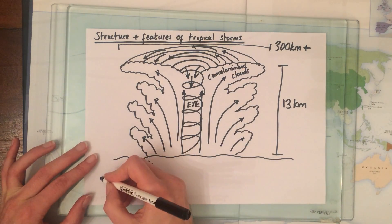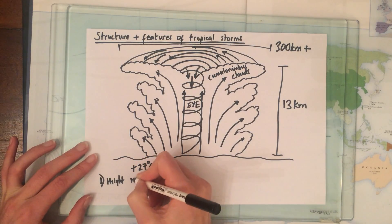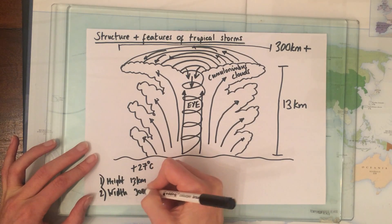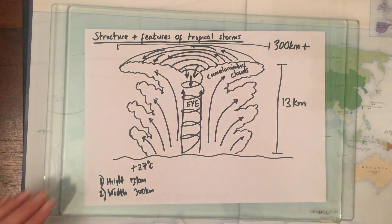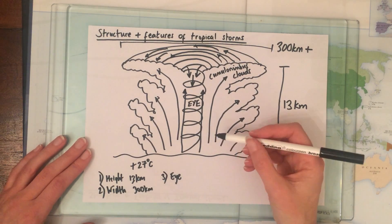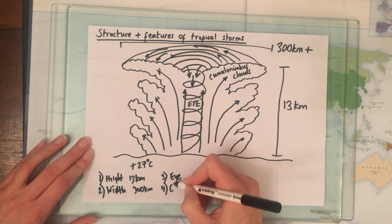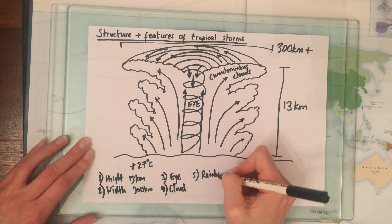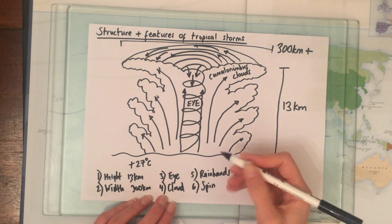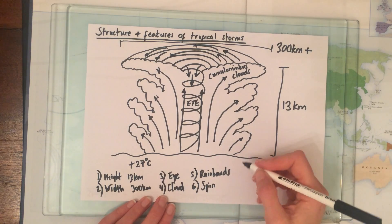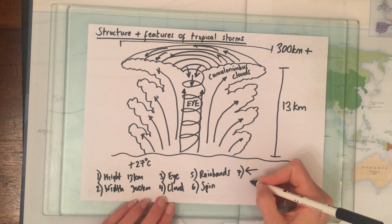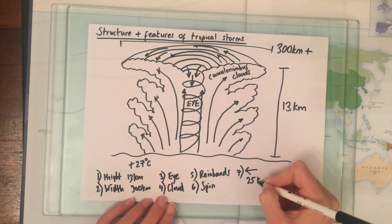To summarise: we have a height of around 13 kilometres, a width of a little more than 300 kilometres across. We have an eye in the storm where conditions are clear, calm, and slightly warmer. We have lots of cloud cover, rain bands coming from the cloud, a spin in an anti-clockwise direction, and the storm moves westwards at up to 25 kilometres per hour.